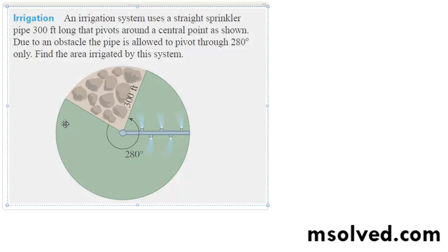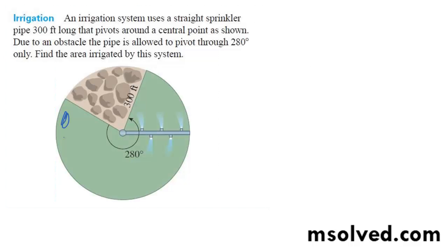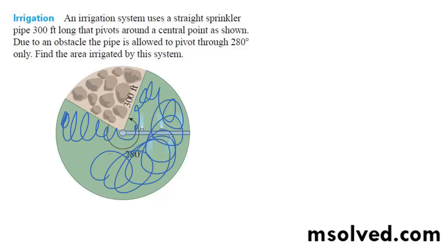What I want to figure out is the area being irrigated, which is essentially all this area in here that I'm scribbling in.